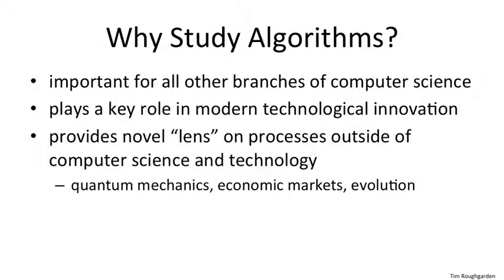Third, although this is outside of the scope of this course, algorithms are increasingly being used to provide a novel lens on processes outside of computer science and technology. For example, the study of quantum computation has provided a new computational viewpoint on quantum mechanics. Price fluctuations in economic markets can be fruitfully viewed as an algorithmic process. And even evolution can be usefully thought of as a surprisingly effective search algorithm.